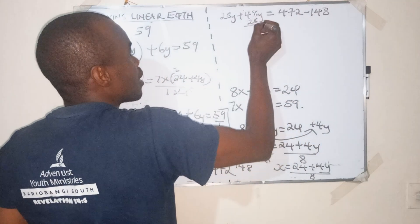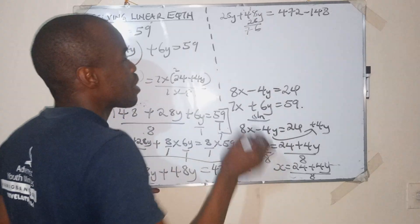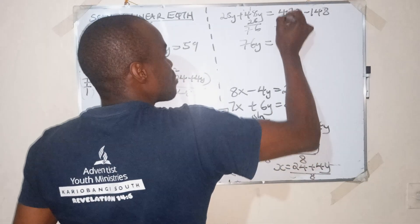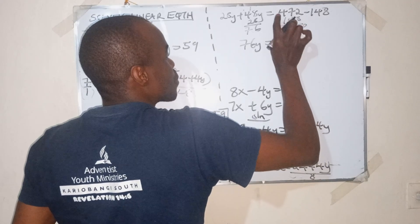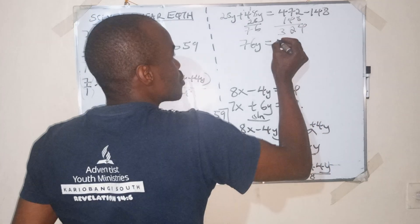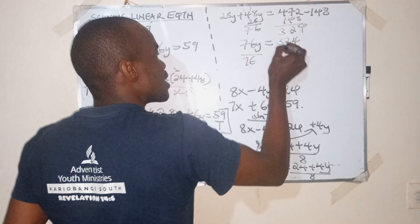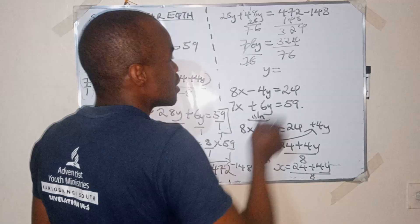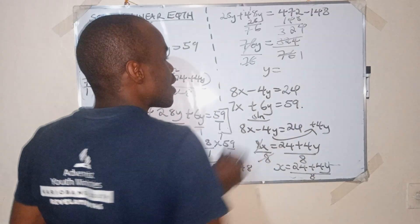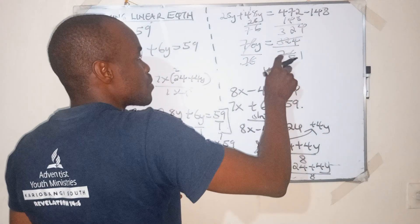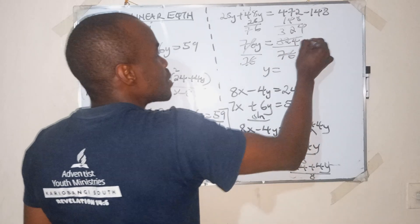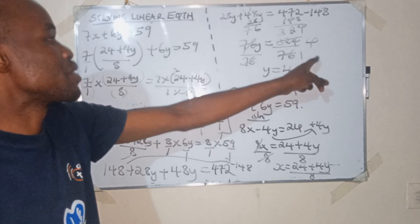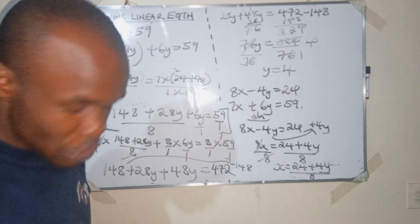We have 76y equals 324. Dividing both sides by 76, y equals 4. We can verify: 4 times 76 gives us the correct result. So y is 4.